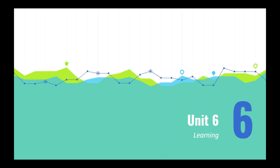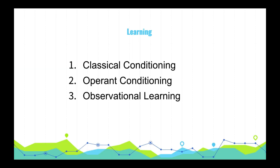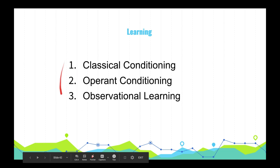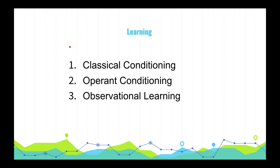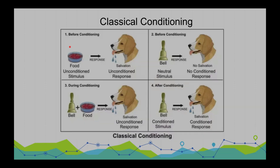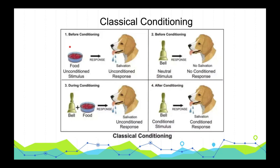So Frank, are we going to learn about Unit 6 or what? Unit 6 is all about learning. Learning here means a relatively permanent behavior change due to experience. Myers delves into three types of learning: classical conditioning, operant conditioning, and observational learning.